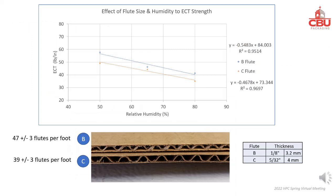The B flute has 47 flutes per foot, while the C flute has 39. Even though the B flute is thinner at 3.2 millimeters than the C flute at 4 millimeters, the B flute has higher ECT strength — the blue line is higher than the red line. This is because more flutes per inch length results in greater strength.